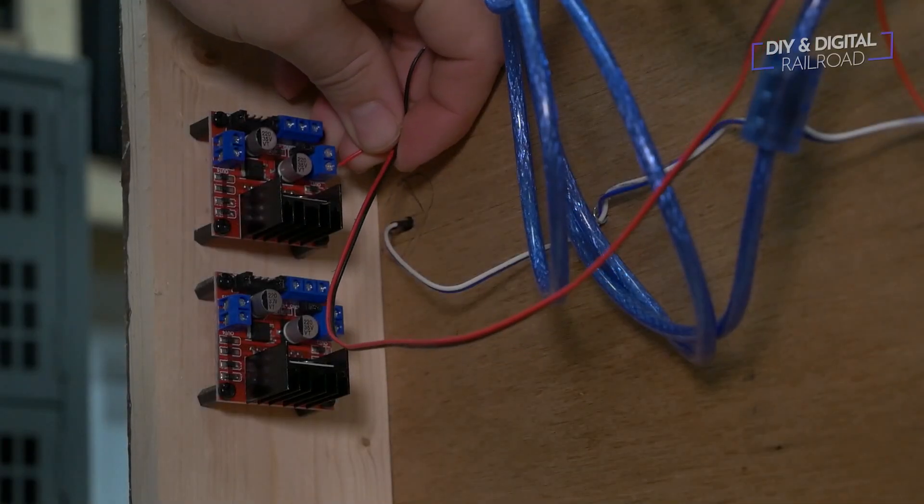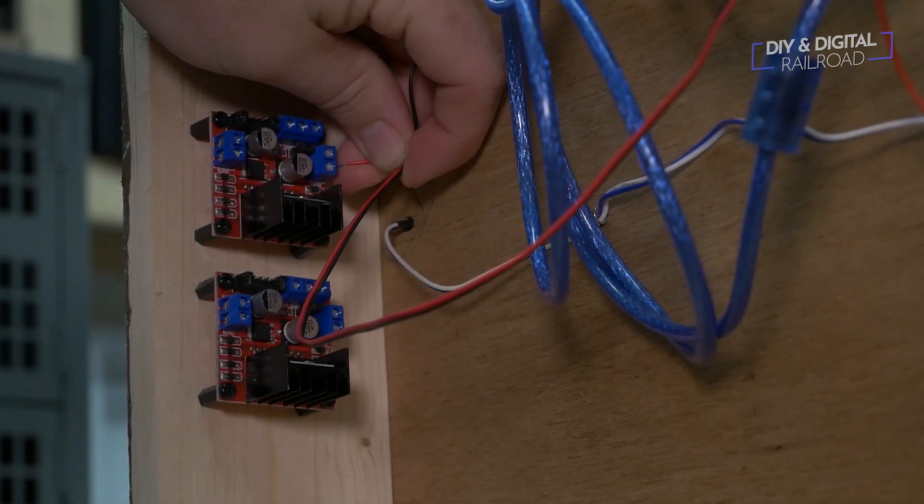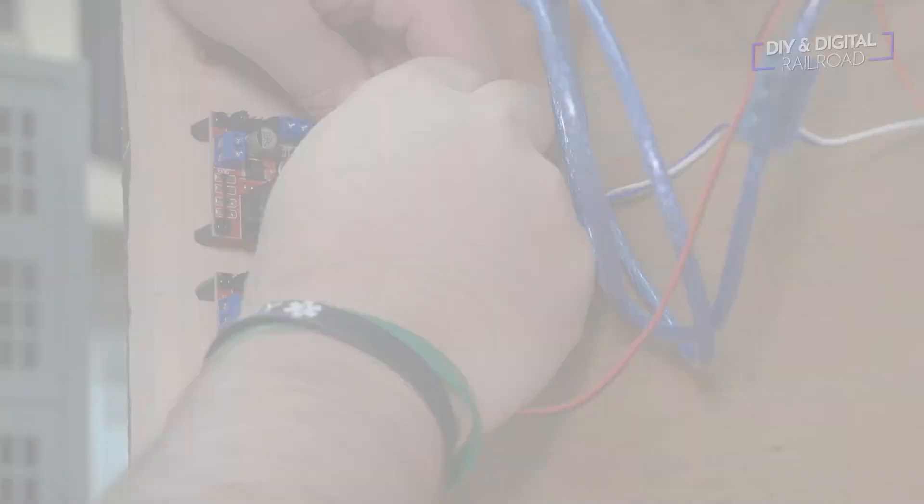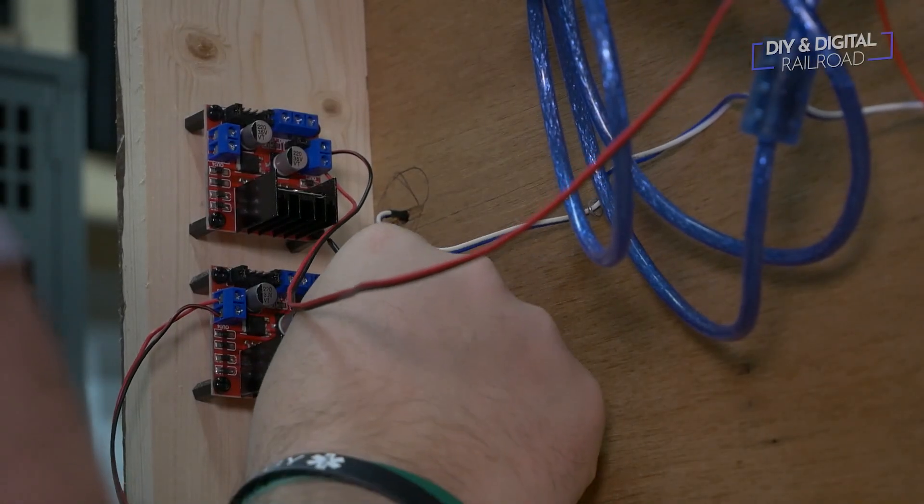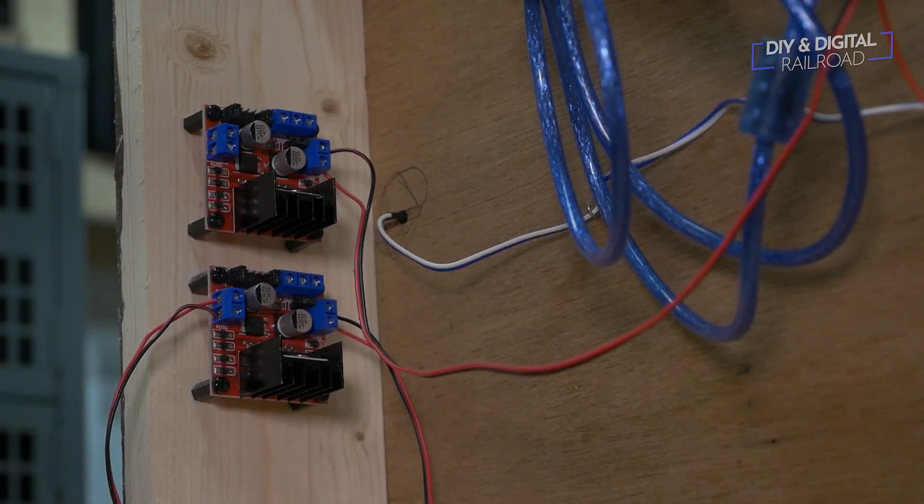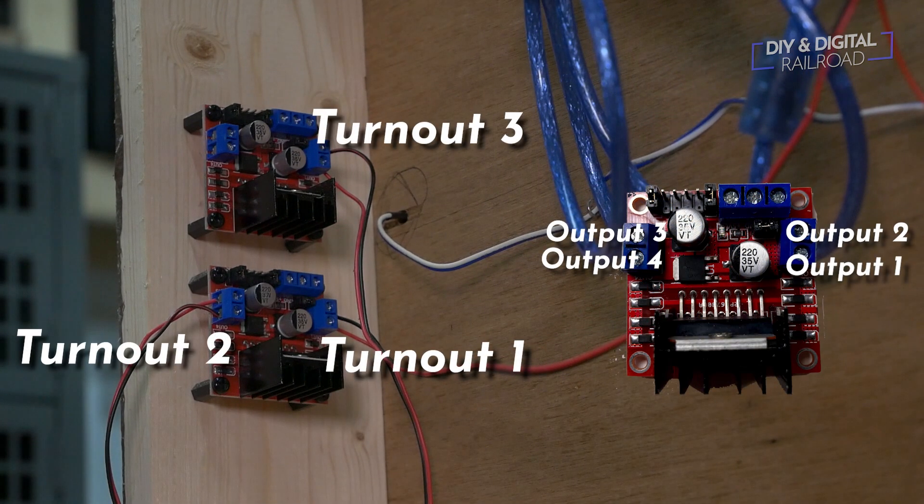Now I hook up the turnout wires to the motor drivers. Since I'm controlling three turnouts, one of the motor drivers will control two and the second one will only have one hooked up to it. For the motor driver controlling two, you're going to want to hook one set of wires up to outputs 1 and 2 and another set up to outputs 3 and 4. For the motor driver that's just controlling one, you'll only want to hook the wires up into outputs 1 and 2.